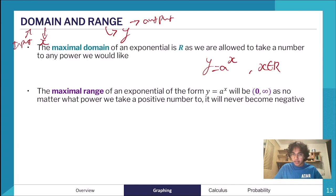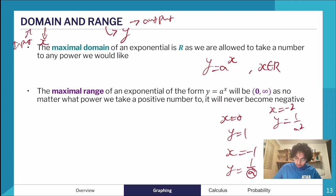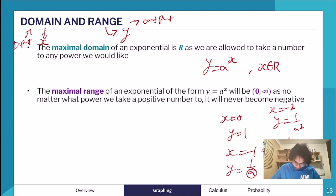The range of a basic exponential is from 0 to infinity. If x = 0 then y = 1; if x = −1 then y = 1/a; as x keeps decreasing, y keeps approaching 0 because the denominator keeps increasing. No index value will result in a negative y-value, so the range for a basic exponential is (0, ∞).